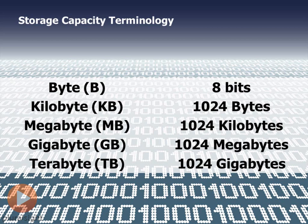Now, from there, if you take 1,000 of those bytes — and to be fully accurate, it would be 1,024 of those bytes — you end up with a kilobyte. The reason I mention 1,000, well, there are two reasons. Number one, the math is a lot easier when you're multiplying by 1,000 than when you're multiplying by 1,024. The second reason is because there are certain storage device manufacturers who will advertise capacity based upon an even 1,000 multiple.